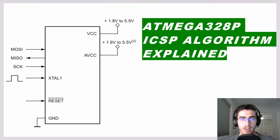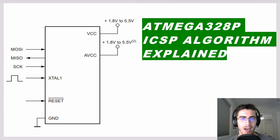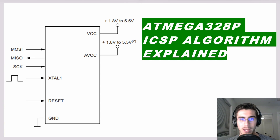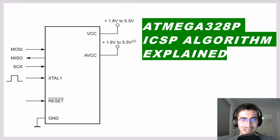What's up everybody! In this video, I'm going to be covering the ATmega 328p ICSP algorithm. ICSP stands for In-Circuit Serial Programming, and it is used to flash code onto microcontrollers without needing a bootloader. If you're curious how to set this up without diving into too much detail, check out my previous video. This video will cover the theory behind the ICSP algorithm, so if you want to take a deep dive, keep watching.